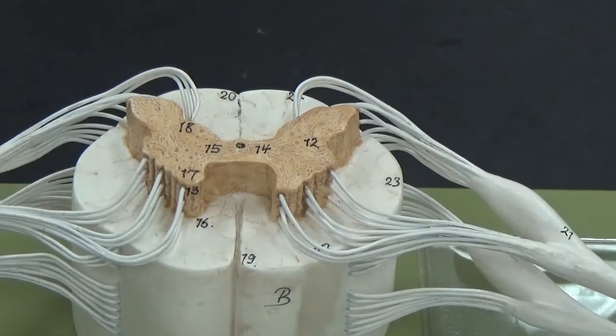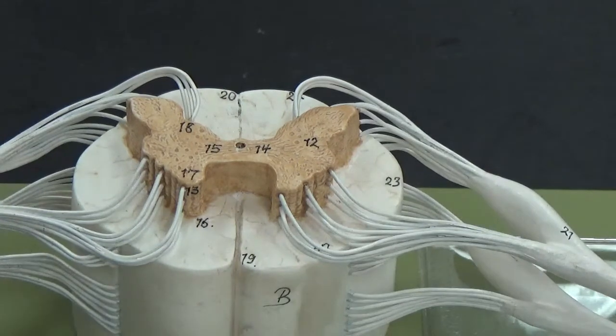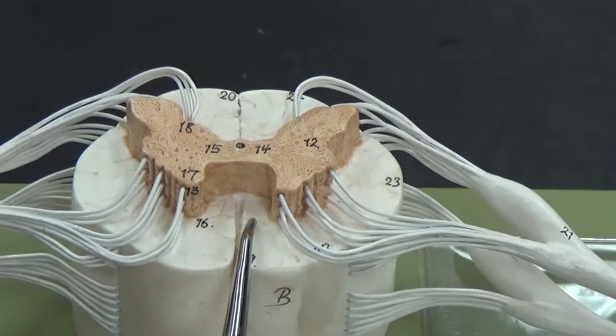Alright, so now we're going to look at the nervous system. The first thing we can notice is this is a cross-section of the spinal cord. We can see that it composes of two different tissues.